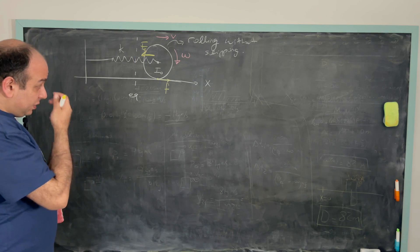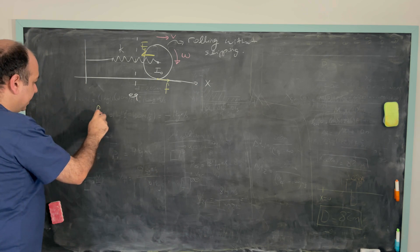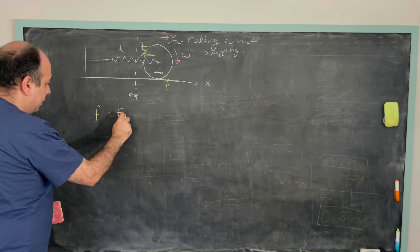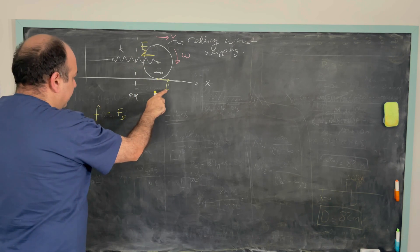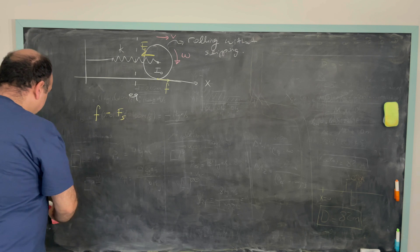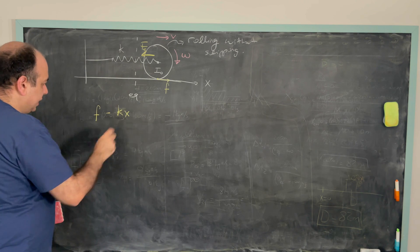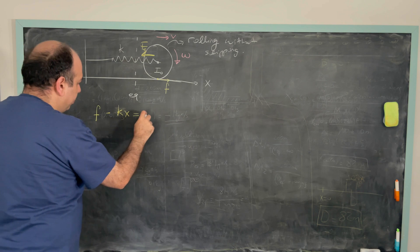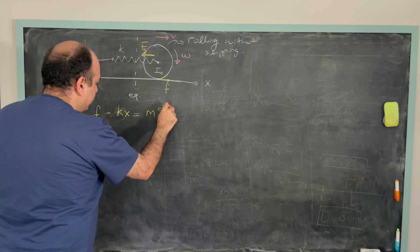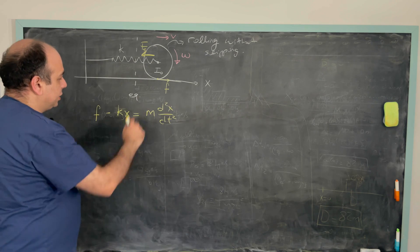Let's look at the translational motion. F is pointing to the right. The static friction is to the right. The spring force is to the left. So I can simply replace the spring force with kx. So this is minus kx. This should be equal to m d square x over dt square. So this is the translational part.